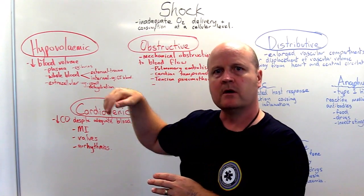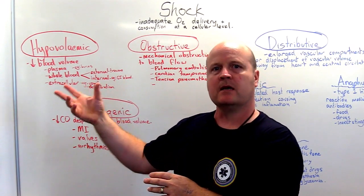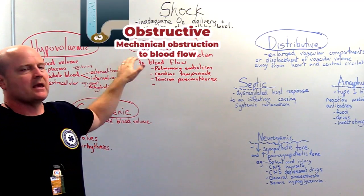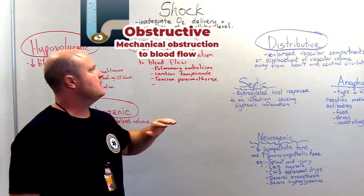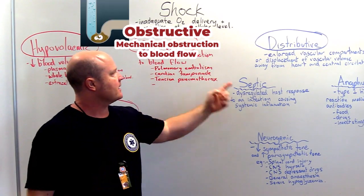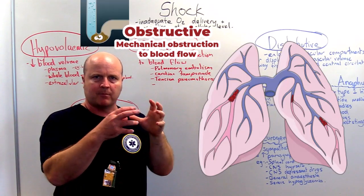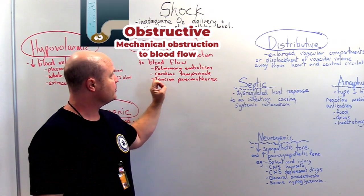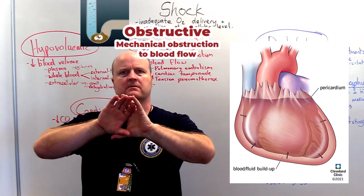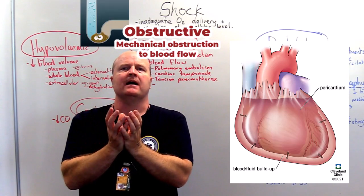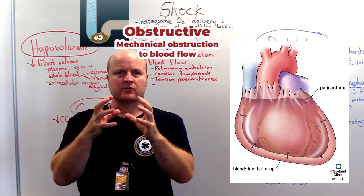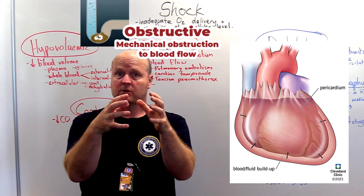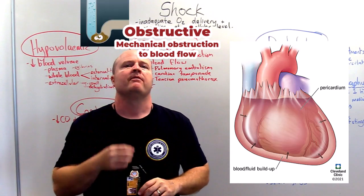Hypo — low; volume; emic — in the blood. Then we have obstructive. So this is a mechanical obstruction to blood flow. This could be a pulmonary embolism — when we get a blood clot in our pulmonary circulation, stopping blood getting through. Could be cardiac tamponade — we've got two layers of glad wrap that wrap around the heart, and if there's trauma or infection or swelling in there, that fluid is going to push in on the heart and obstruct it, stopping it from filling. That could be obstructive shock.